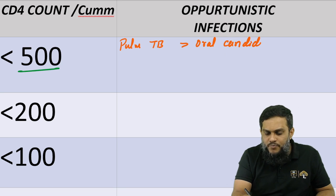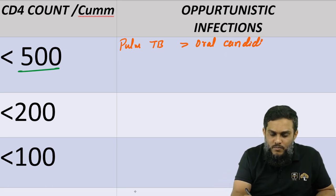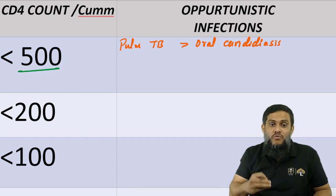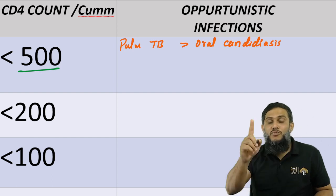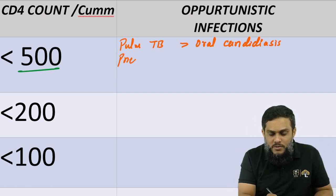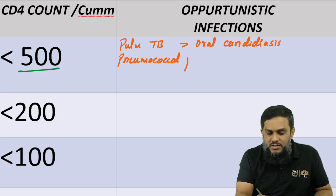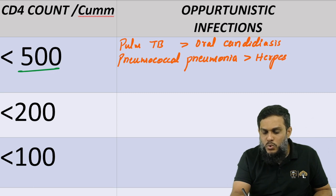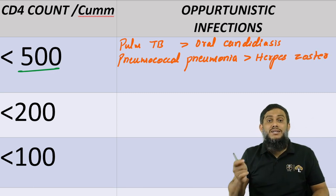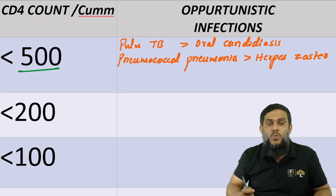Apart from pulmonary tuberculosis and oral candidiasis, we also see bacterial pneumonia — the most common bacteria causing pneumonia is pneumococcus, so pneumococcal pneumonia — and herpes zoster, also known as shingles. Herpes zoster is a reactivation infection of the varicella zoster virus.